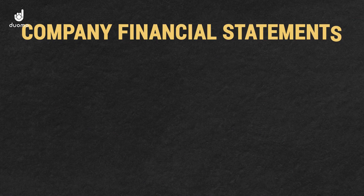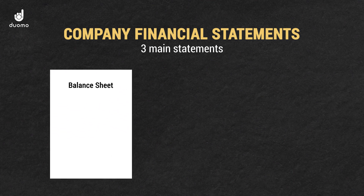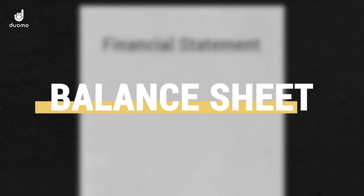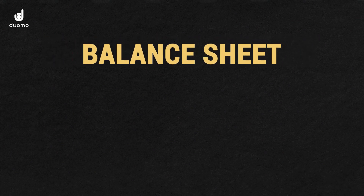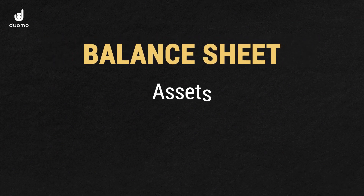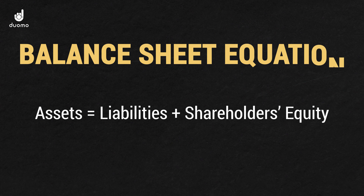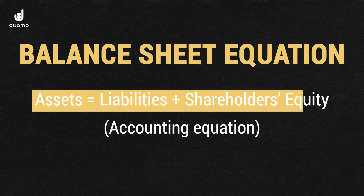The financial statements of a company are usually made up of three main statements: the balance sheet, the income statement, and the cash flow statement. The balance sheet is typically the first statement to appear and it gives a snapshot of the company's assets, liabilities and shareholders' equity at a specific point in time. These three aspects make up what is known as the balance sheet equation, also known as the accounting equation, which states that assets are equal to liabilities and equity.